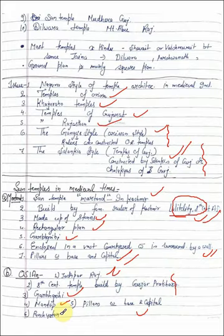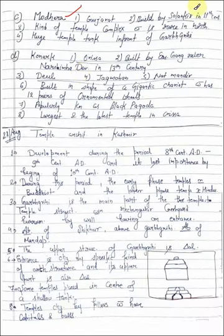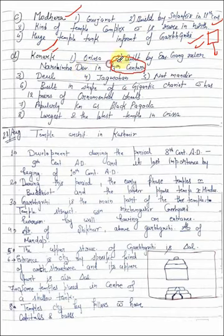There is a temple called Gurjara built by Gurjara Pratihars. In its name there is Gurjara Mandap, pillars, space capital, and Panchayatan style. These are Nagara style temples built by Solankis in the 11th century. This is a temple complex which was slightly different than the northern side, with huge temple tank in front of Garbhagriha. Then it comes to Konark Odisha, built by Eastern Ganga ruler Narasimha Deva in 13th century. This includes diol which we call Garbhagriha, then Jagmohan and Natmandir. They were built in the shape of a gigantic chariot which has 12 pairs of ornamental wheels. This is also called Black Pagoda.